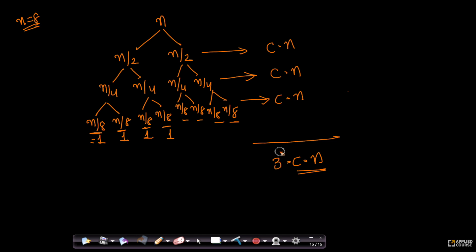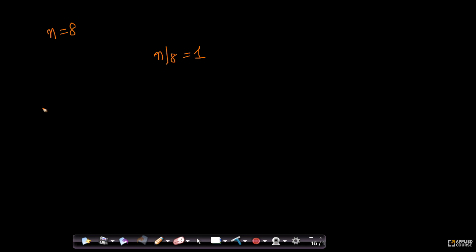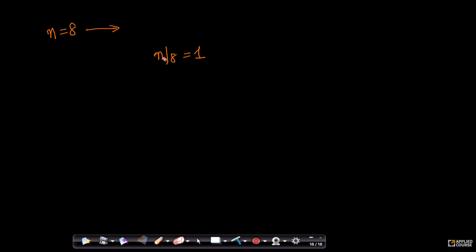That constant 3 is actually the height of this recursion tree. When n = 8, the recursion tree goes 3 levels deep because n/8 = 1. This is why it is called the recursion tree method — it literally looks like a tree.